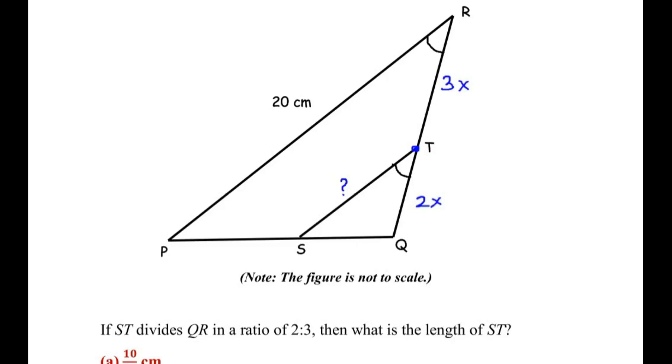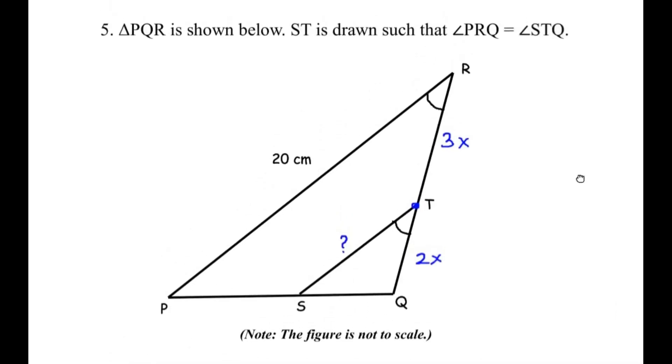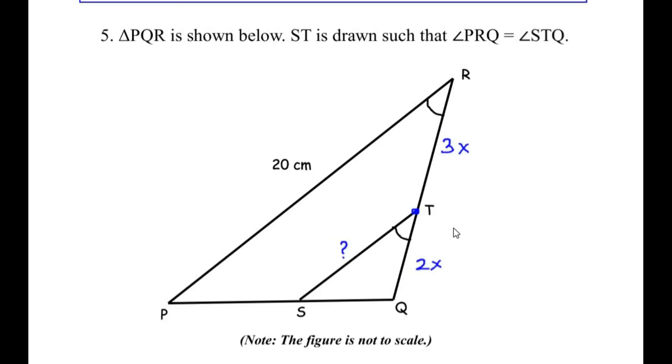Now this question depends on the similarity of triangles as I had mentioned before. Let us divide this given triangle into two triangles. One is the bigger triangle PQR and the other one is the triangle SQT. Let me draw it over here. So here I have drawn a rough diagram of the two triangles.